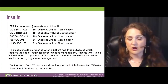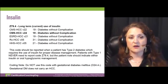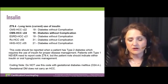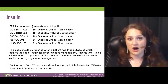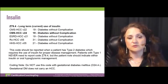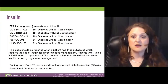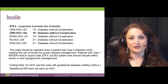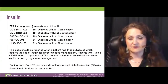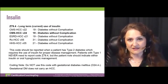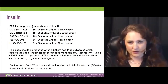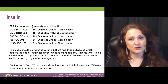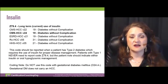The guidelines allude to not capturing Z79.4 unless you're asked to. Maybe you're part of a MIPS quality capture and they want you to capture Z79.4 every time it's applicable regardless — they do that with BMIs a lot. If you're told to capture something beyond the guidelines, there's probably a reason, usually for statistics or reporting. However, Z79.4 is frequently overlooked.